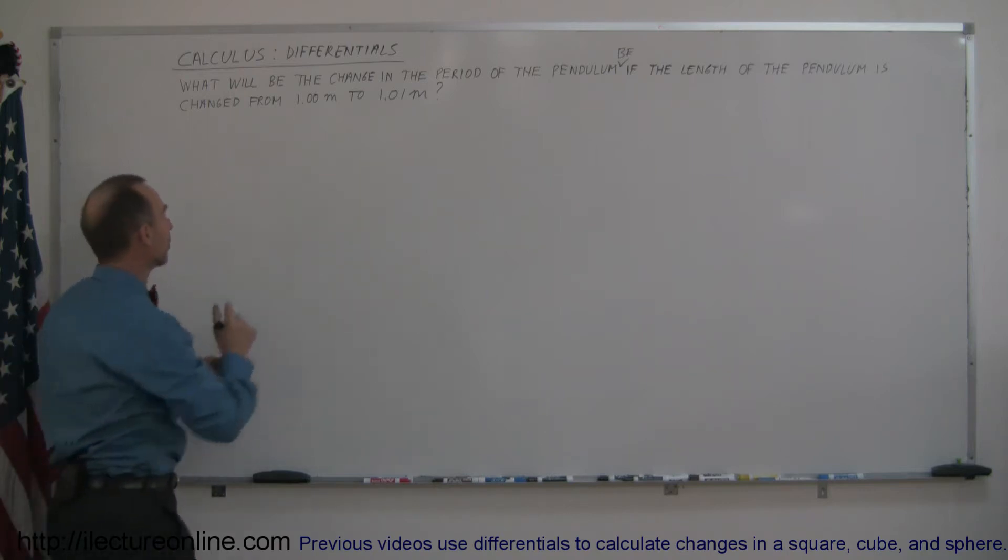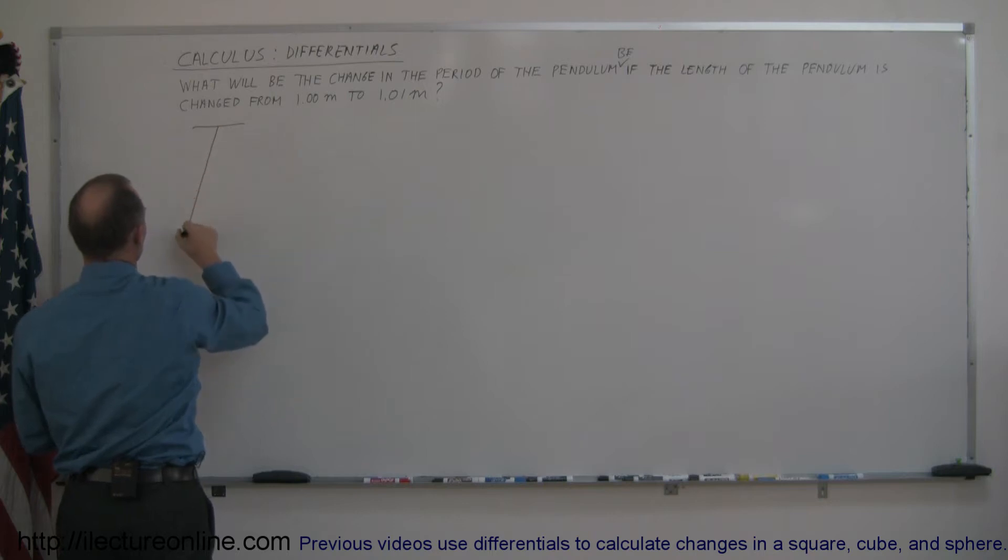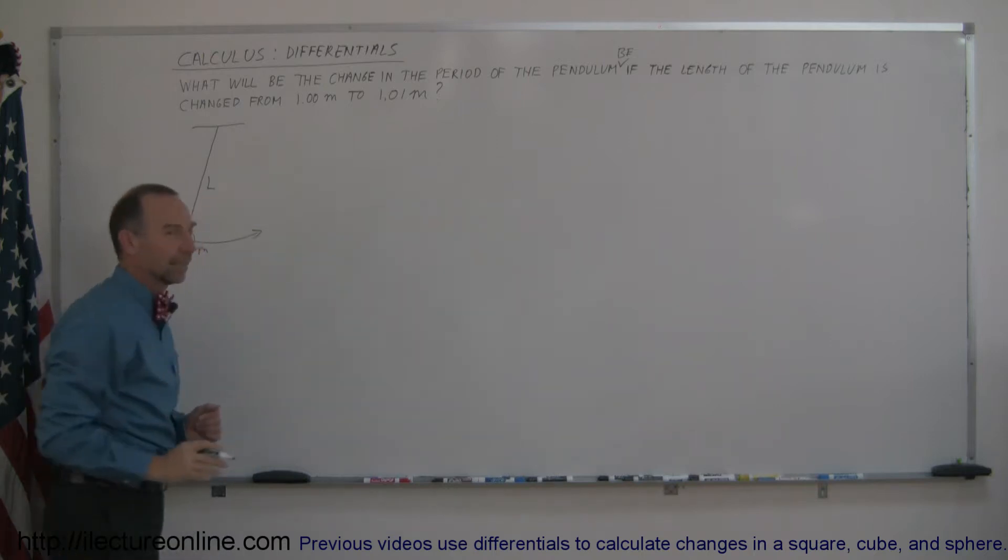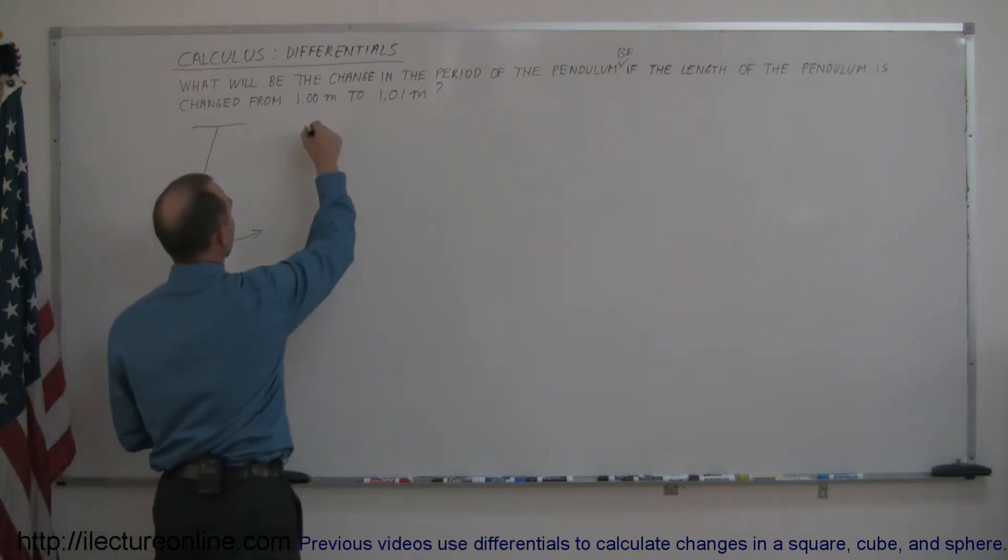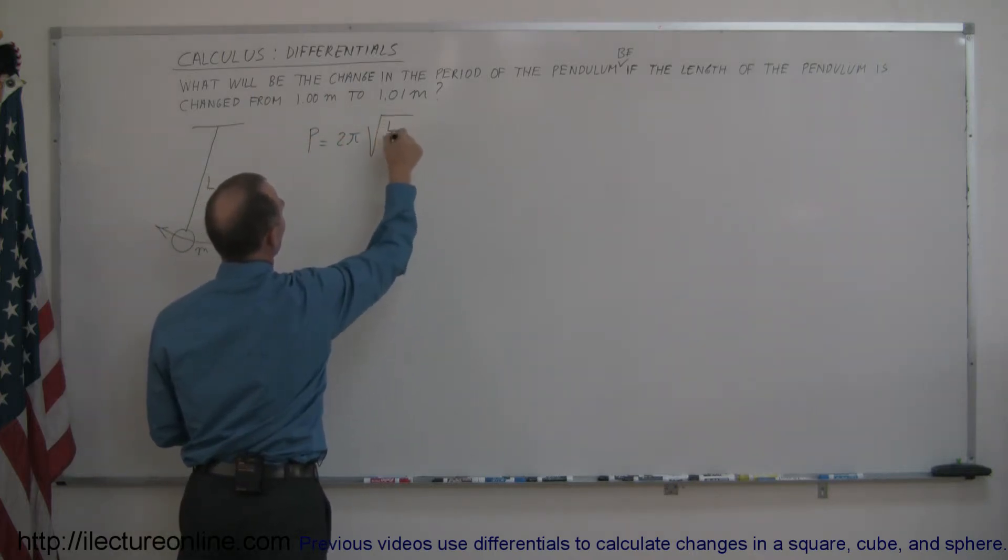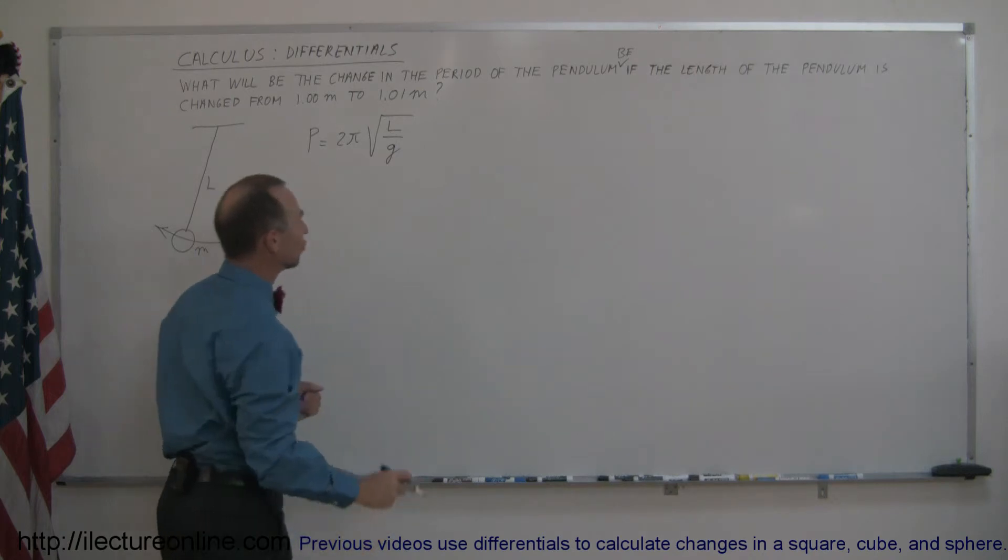Alright, so imagine a pendulum which has a mass at the bottom here and the pendulum has a certain amount of length and it swings back and forth. The period would be the time that it takes for the pendulum to swing one way and then back to where it started. The period, let's say p for period, is equal to 2π times the square root of the length divided by the acceleration due to gravity, g.